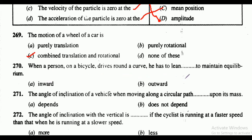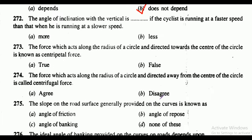Question 270: when a person on a bicycle drives around a circle, he has to lean — inward or outward — to maintain equilibrium. The correct answer is option A, that is inward. Question 271: the angle of inclination of a vehicle when moving along a circular path depends or does not depend upon its mass? The correct answer is option B, that is does not depend upon its mass.